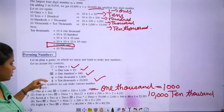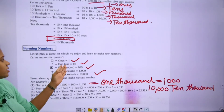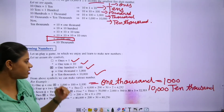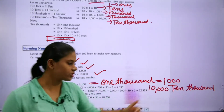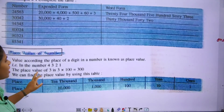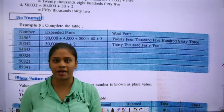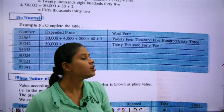Next, forming numbers. The place values are: ones, tens, hundred, thousand, and ten thousand. Move to the next slide. Complete the table. Students, you have to expand the numbers. Expanded means you have to write the numbers in expanded form.